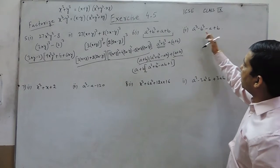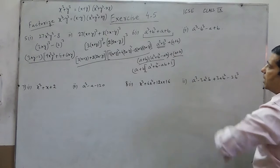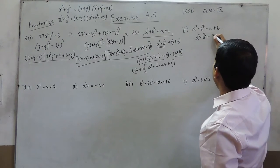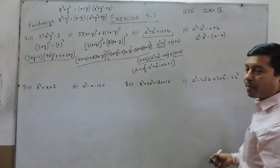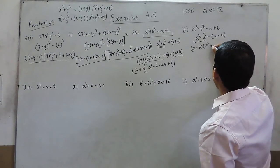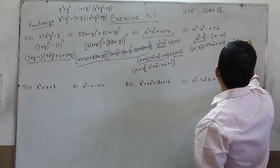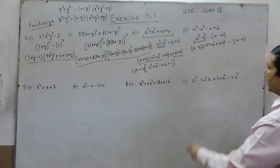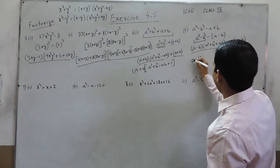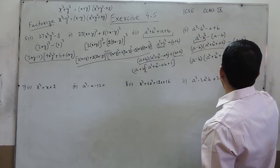The same way we can factorize part 2, where the only difference is a negative sign. So we write a³ - b³ - (a-b). Factorizing a³-b³ gives (a-b)(a²+b²+ab), and the remaining term is -(a-b). Taking (a-b) as common from both terms, the result is (a-b)(a²+b²+ab-1).